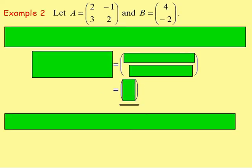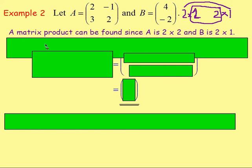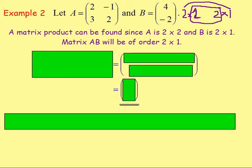Let's try another example. Example 2: let matrix A be [2, -1; 3, 2] and matrix B be [4; -2]. Matrix A is a 2 by 2 matrix. Matrix B has 2 rows and 1 column, so it's a 2 by 1 matrix. We can multiply them together because the inner numbers — the 2 and the 2 — are the same. The resulting matrix will be of order 2 by 1. So the matrix product AB can be found since A is 2 by 2 and B is 2 by 1.